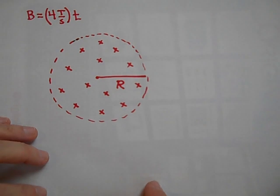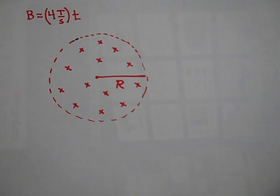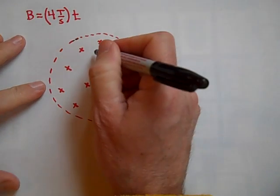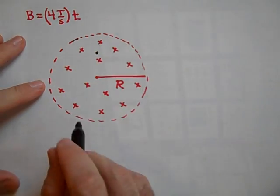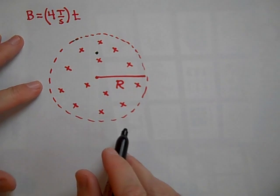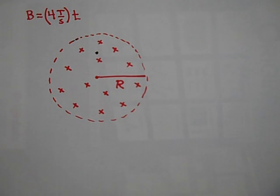Could you tell me which way the electric field is going right here? Which way is the electric field? There'll be an electric field induced. Which way will that electric field be going right there at that point? Go ahead and try.